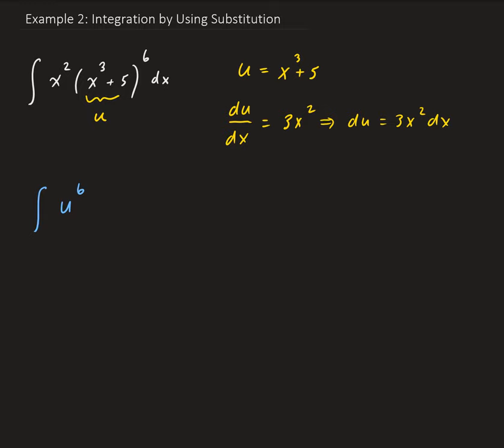Notice that here we have an x squared and dx. So what we can do is we can isolate this part.